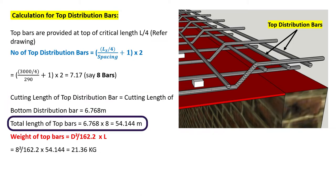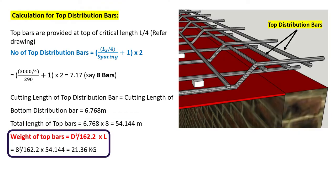Total length of top distribution bars equals cutting length times number of bars: 6.768 × 8 = 54.144 meters. Weight of top distribution bars is D² / 162.2 × L, where D is 8 mm and L is 54.144 meters. The total weight is 21.36 kg.